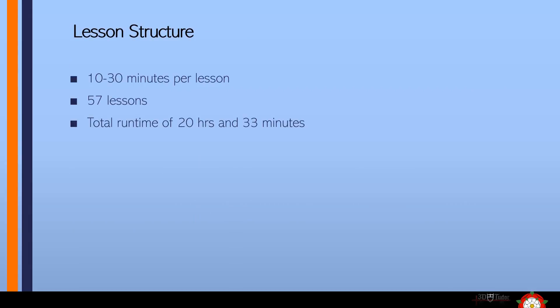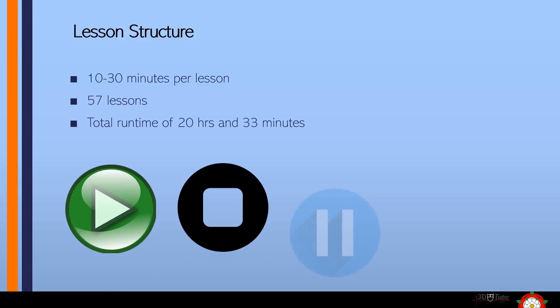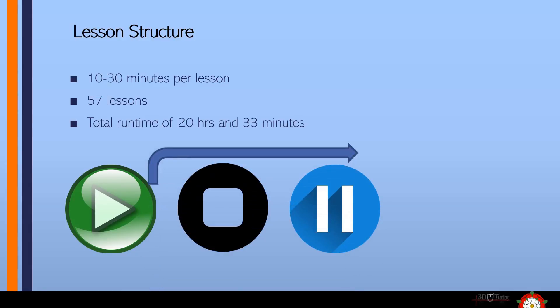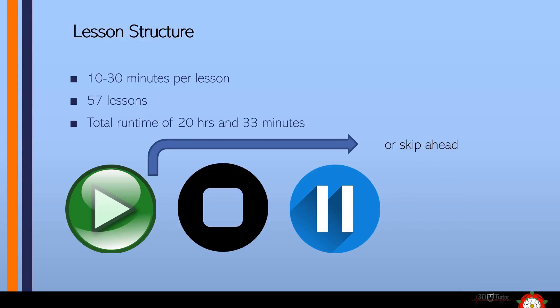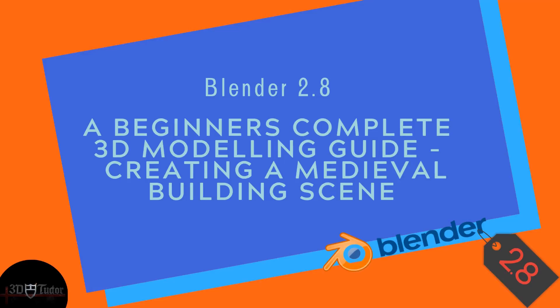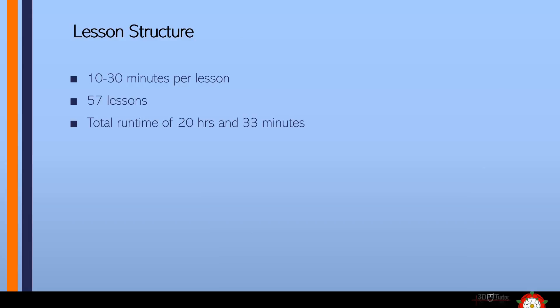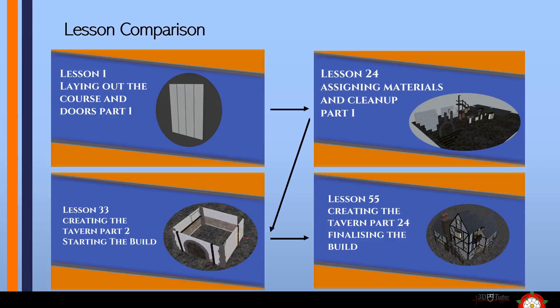No items apart from the Blender download are used — everything is right here within the course. The lessons for the most part start off short, and I've kept most lessons between 10 and 30 minutes so they're easily accessible — pick up and take breaks, start, stop, and pause to your liking. You could even choose a specific lesson on something you want to learn rather than completing all lessons in order. You will learn how to quickly and easily create assets using Blender's vast array of functions, how to UV unwrap and mark seams to create realistic materials, and how to quickly edit materials to suit the look you're going for. This course has a total run time of 20 hours and 33 minutes and is made up of 57 classes.